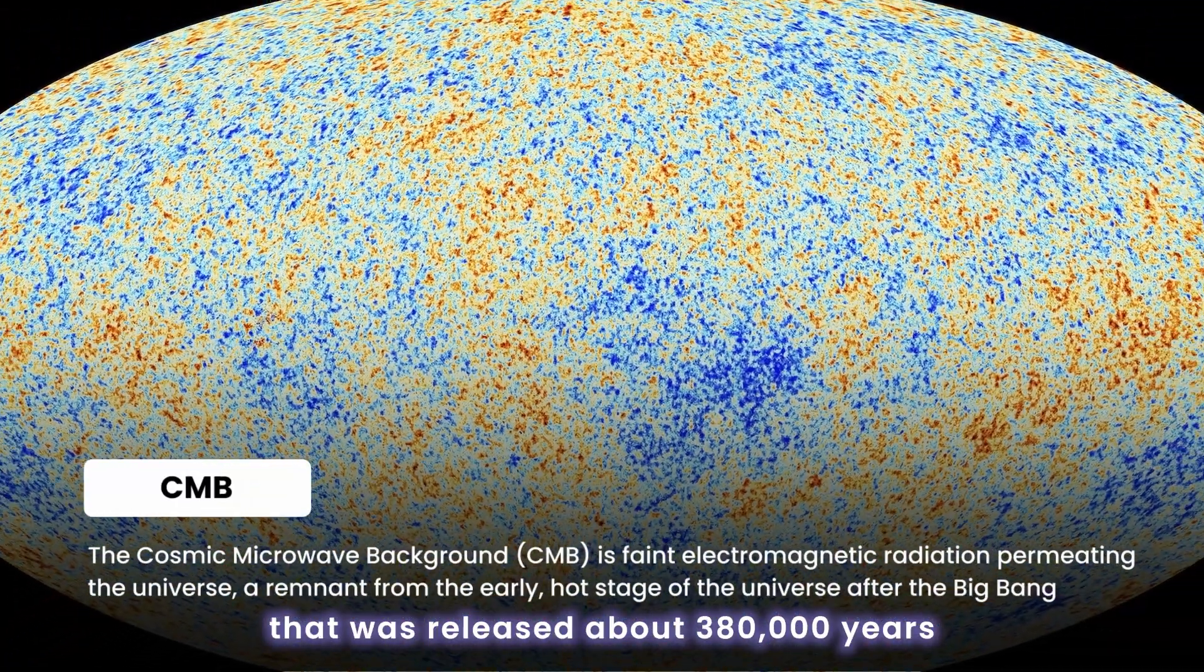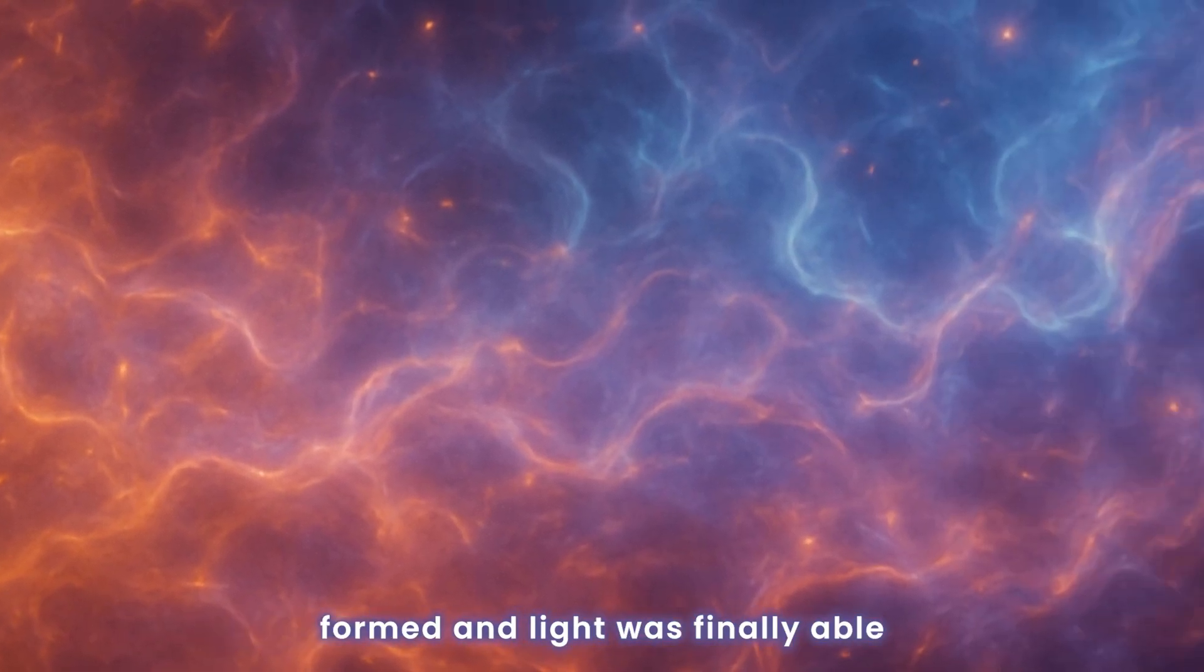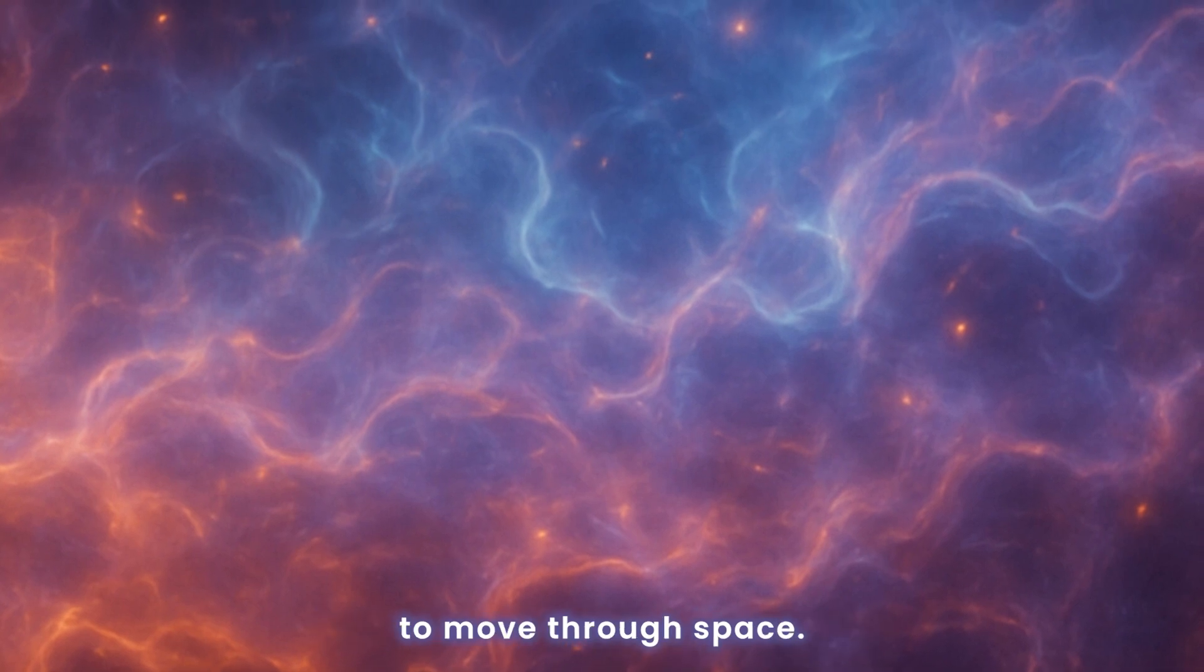Light that was released about 380,000 years after the Big Bang. Before this time, the universe was so hot and dense that light couldn't travel freely, but as it expanded and cooled, atoms formed, and light was finally able to move through space.